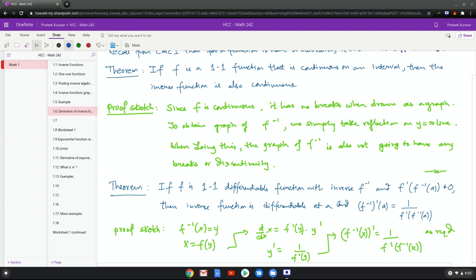But what's y? y is f inverse x. So f inverse x prime equals 1 over f prime of f inverse x as required. This is just plugging in the right variables and making the right substitution.